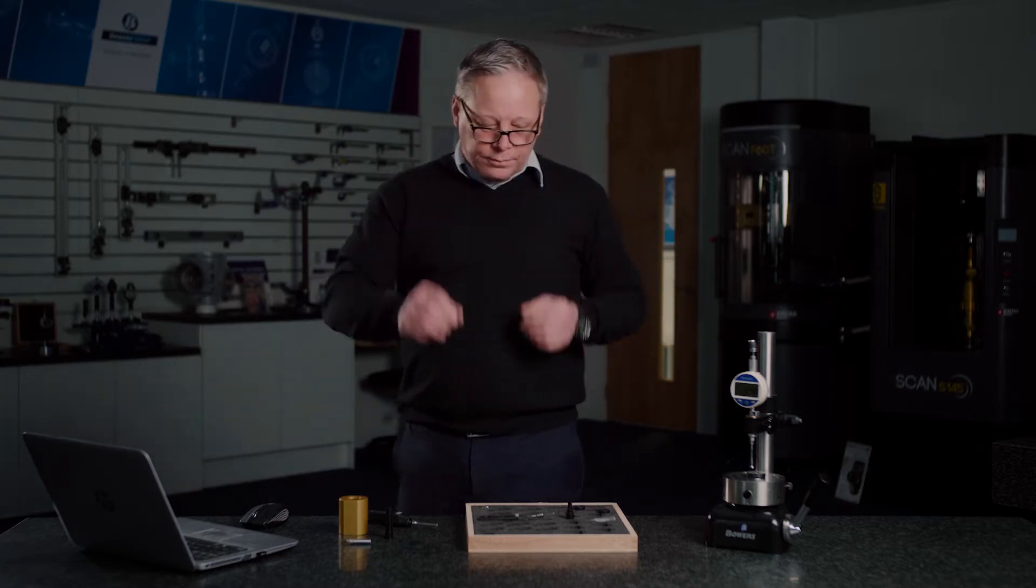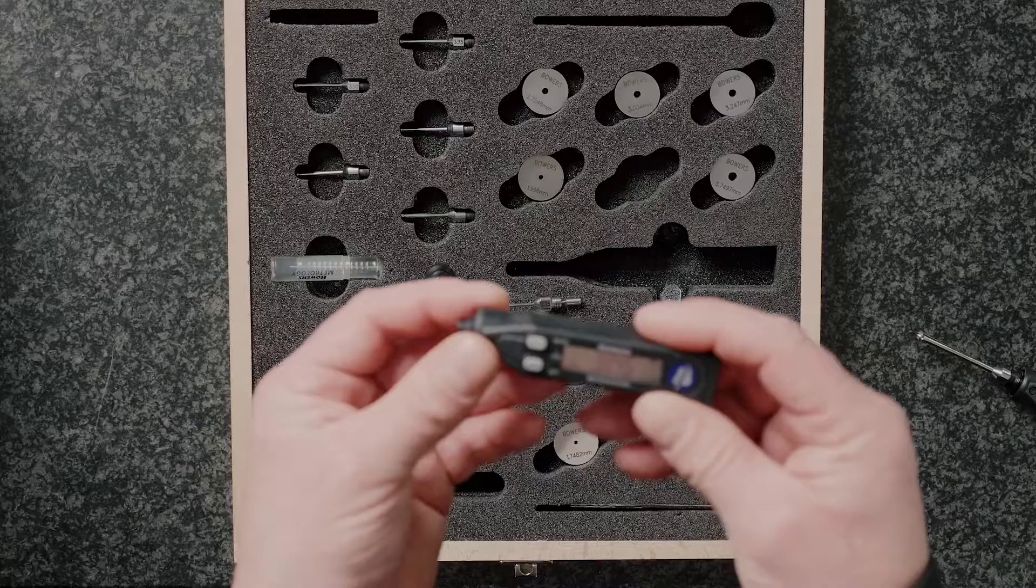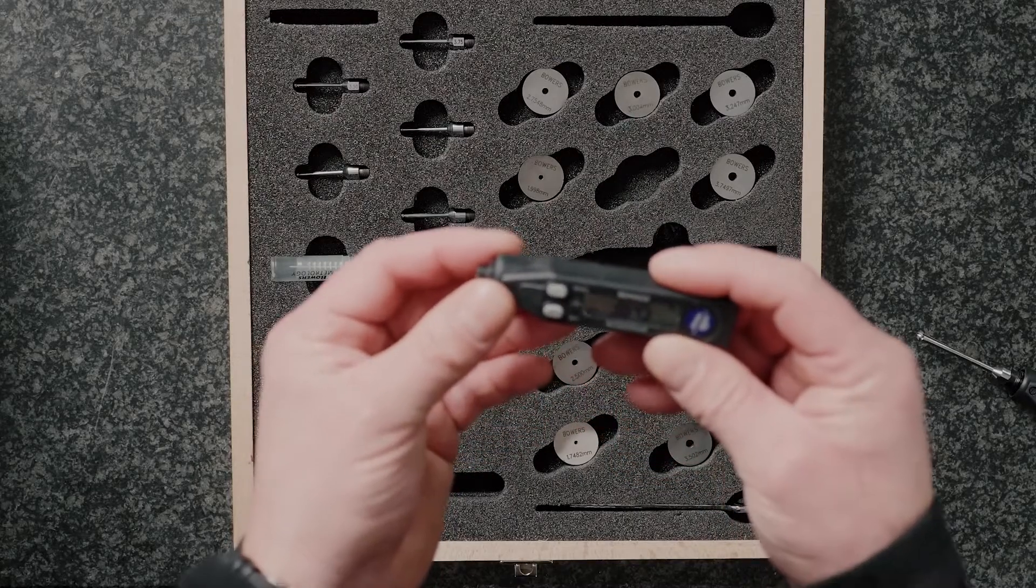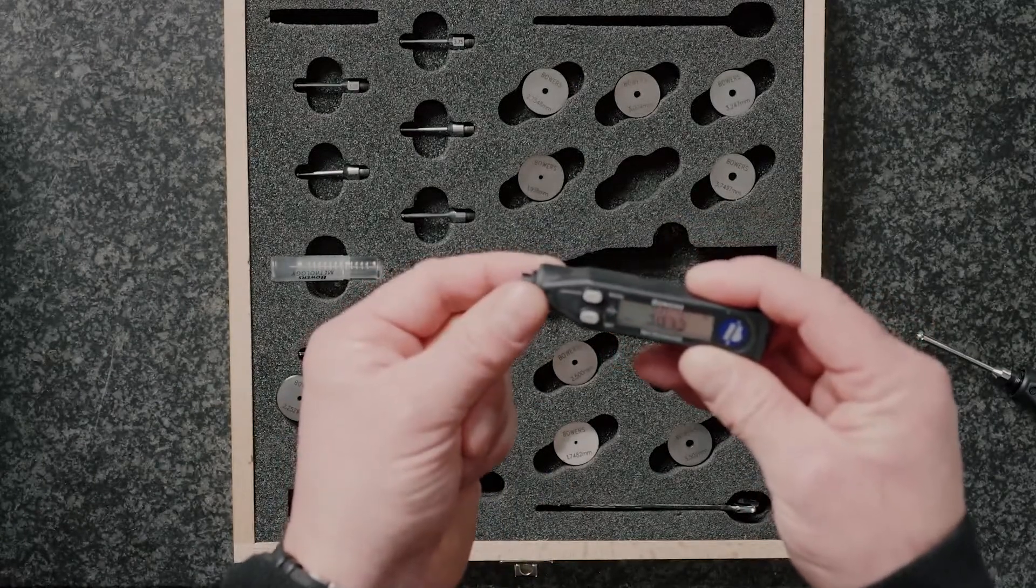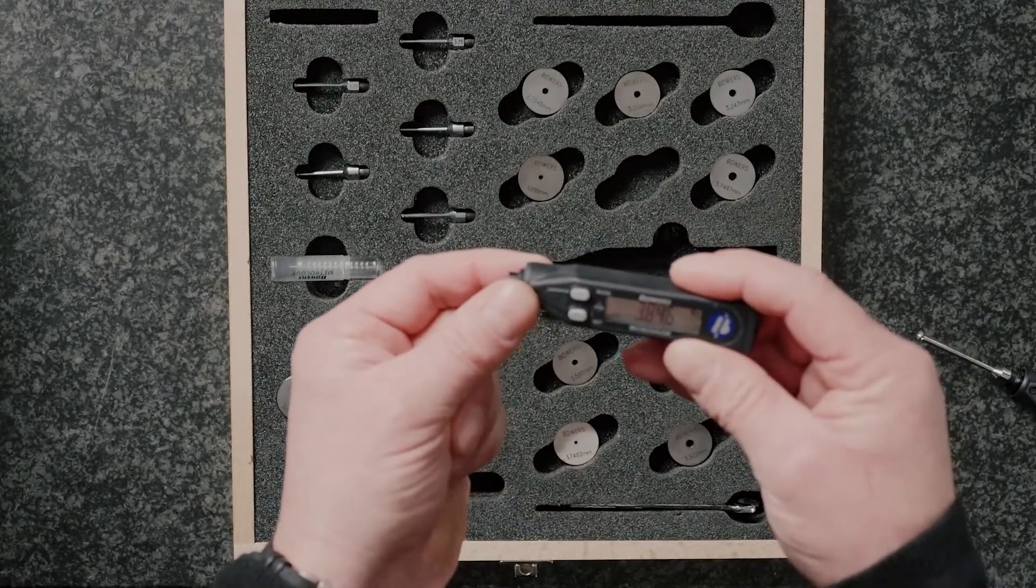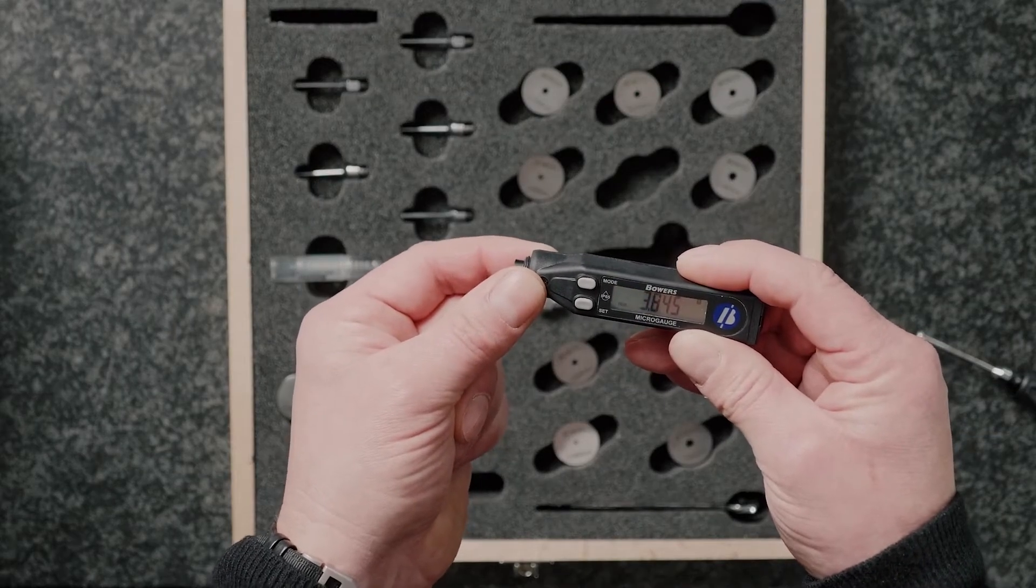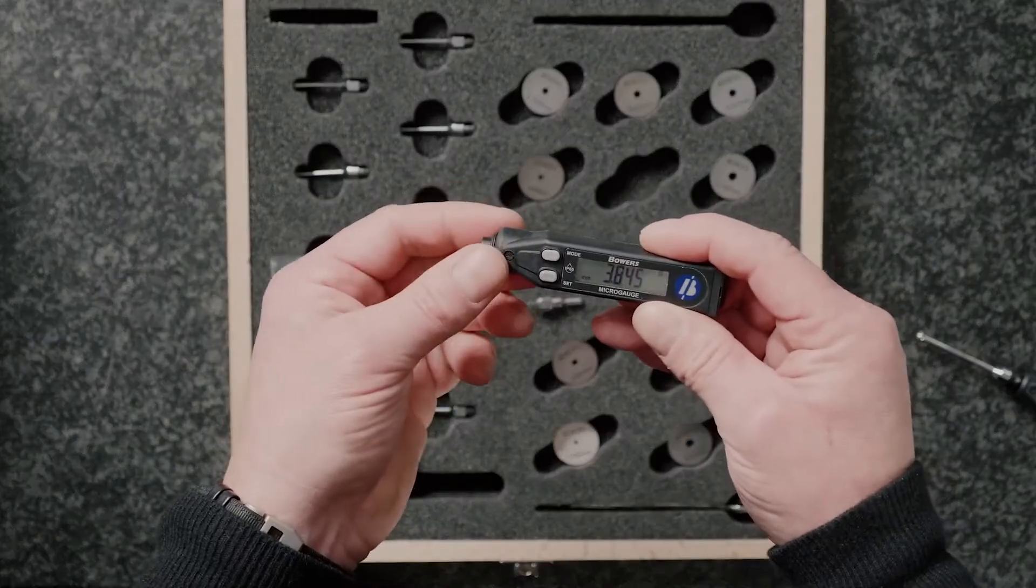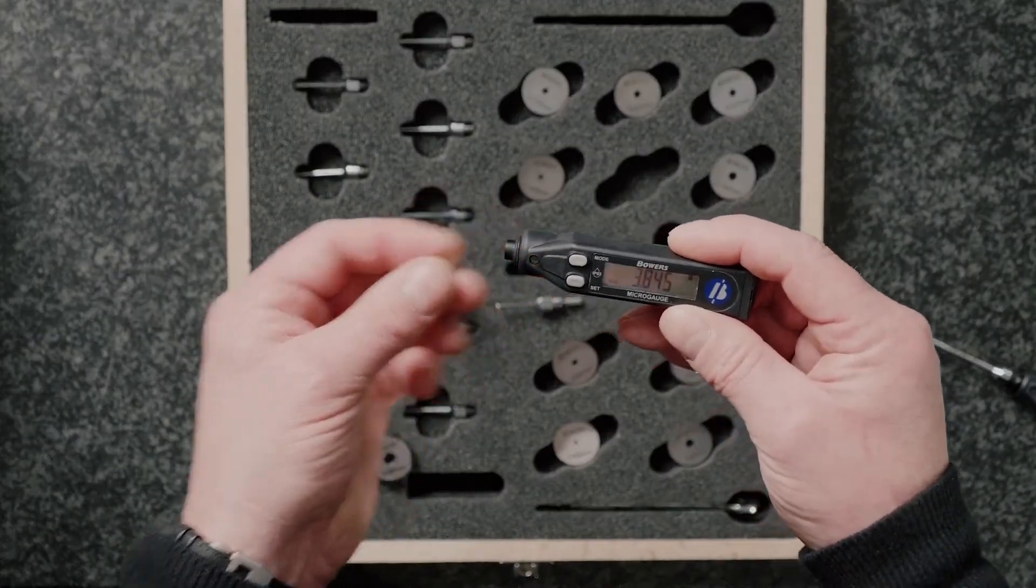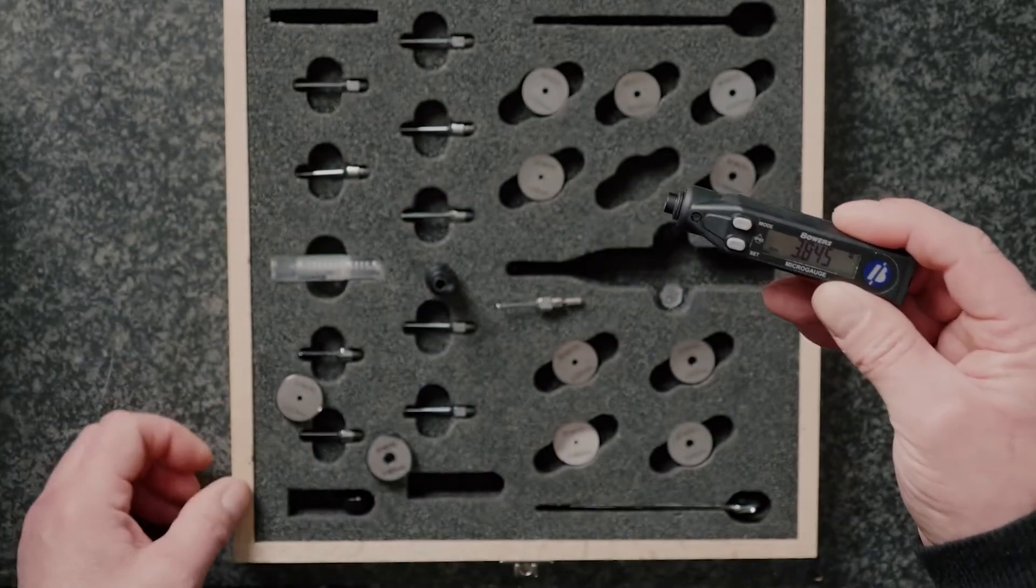The micro gauge is a digital pen style display which is designed to work with a range of heads to measure bores from one millimeter through to ten. In inches that's as little as 37 and a half thousandths right through to 407 thousandths of an inch. The resolution is a micron or 50 millionths in inches and the gauge is available individually or in a set form as we have here.